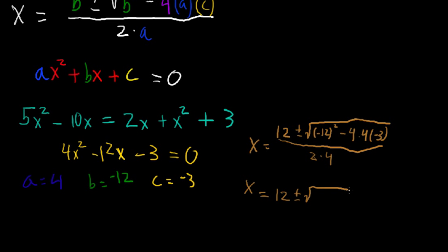12 plus or minus the square root, okay, we're going to have 144, that's negative 12 squared, minus, I'm going to do some mental multiplication here, we have 4 times 4, well, we have a negative 4 times 4, that's going to be negative 16, okay, negative 16 and then times negative 3, I think that's 48. Is that right? No, no, no. I think it is, yeah, it's 48. Okay, and that's a positive 48, alright, all that over 2 times 4, that's 8.